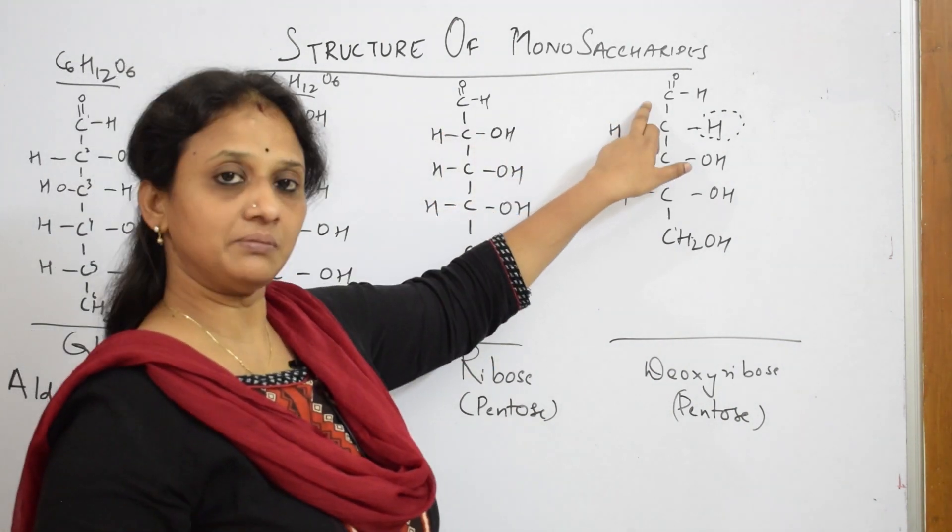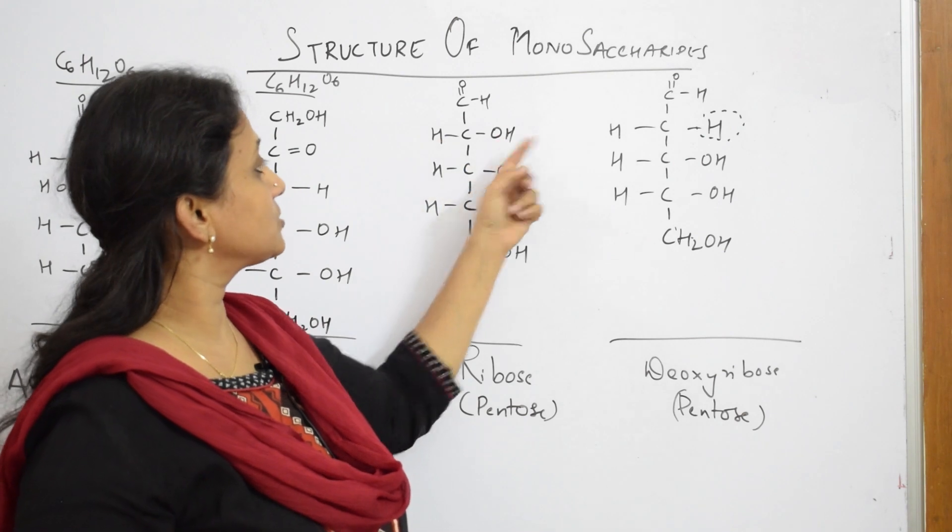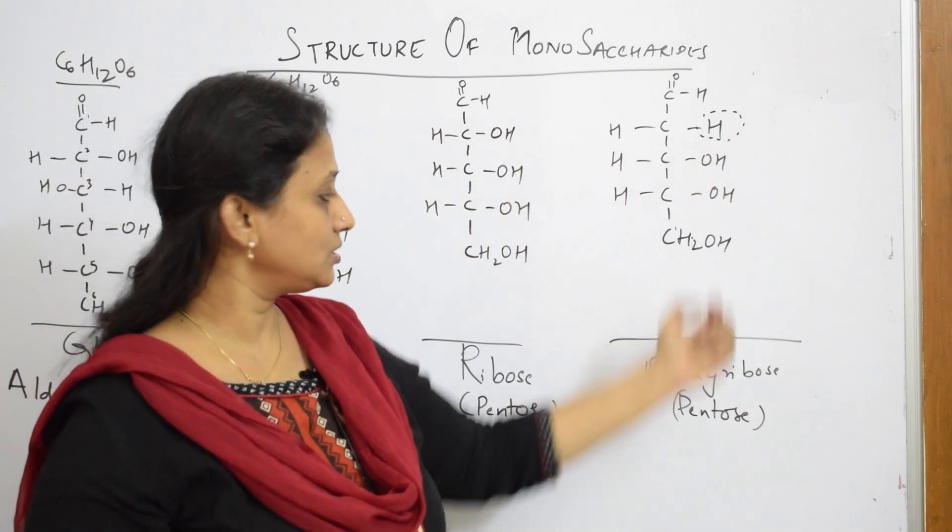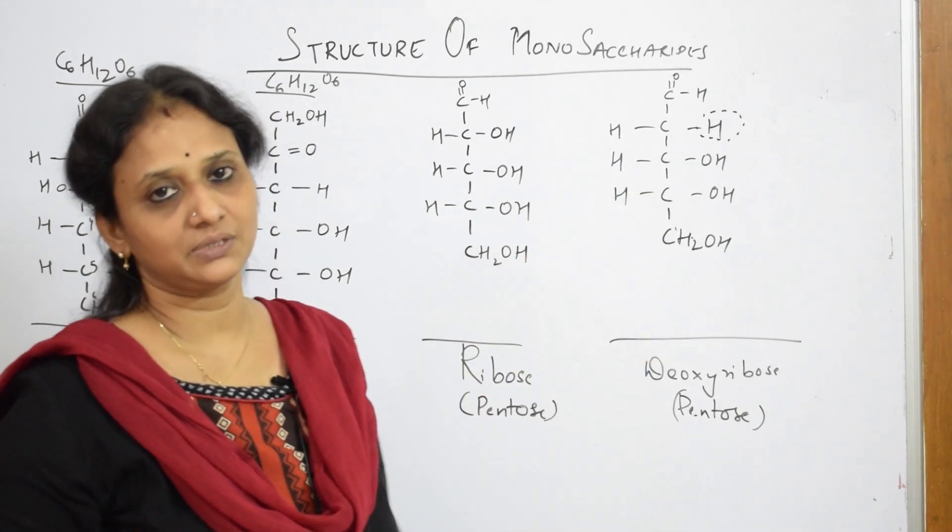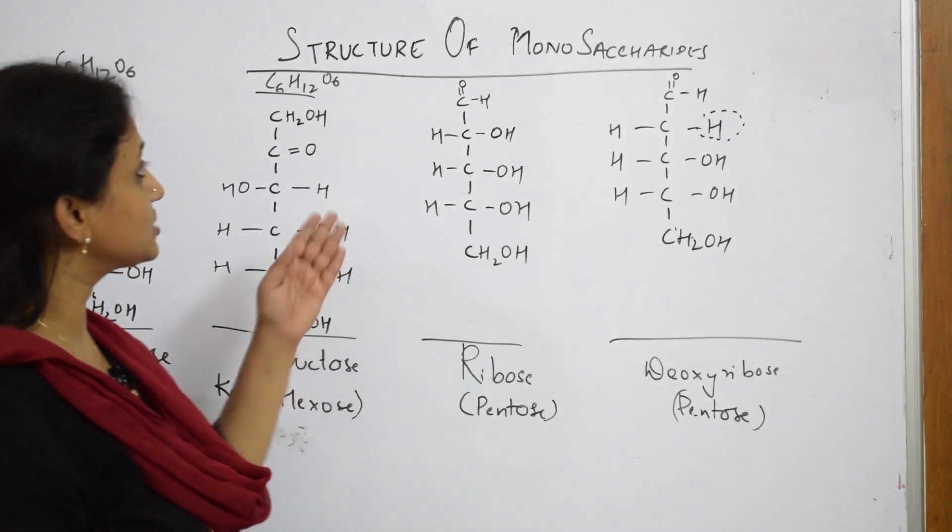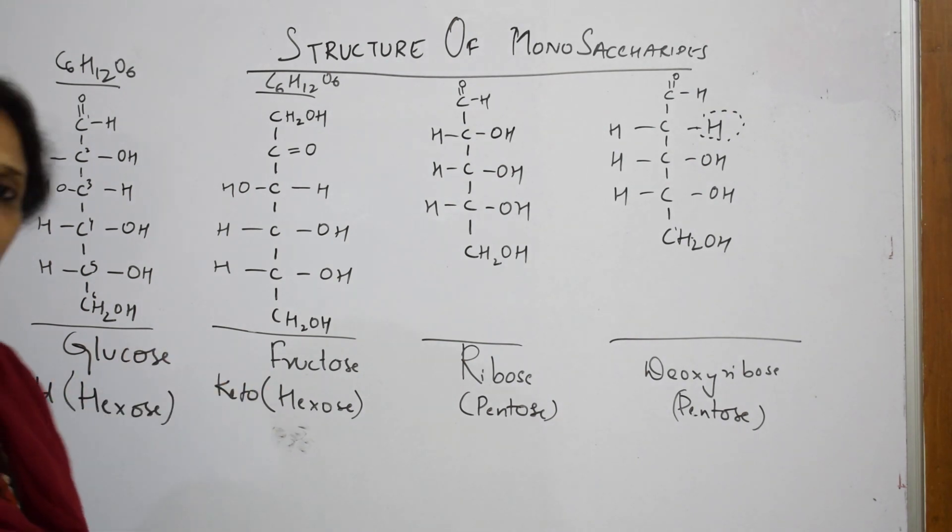Aldehyde group same. H and OH. This is the difference. There is no oxygen. Hence, called deoxyribose. Remaining both are same. The last carbon also same. Please note the structures of monosaccharides. One, two, three, four.